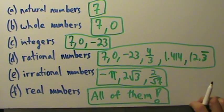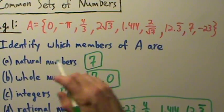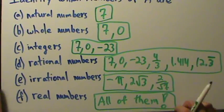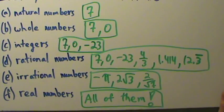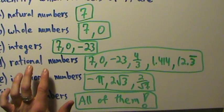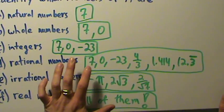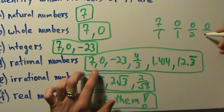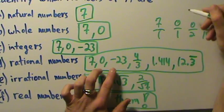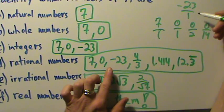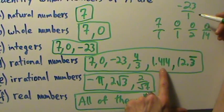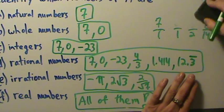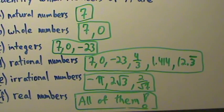We can have complex numbers which aren't exactly real numbers, but we haven't talked about those yet, so don't worry about those for now — those will come up much later. Anyway, that's it for this example: we have a set of a bunch of numbers, and we want to identify which members of set A are natural numbers, whole numbers, integers, rational numbers, irrational numbers, and real numbers. For rational numbers, you can always express them as a ratio of two integers — like 7 is 7 divided by 1, and 0 is 0 divided by 1, negative 23 is negative 23 divided by 1.